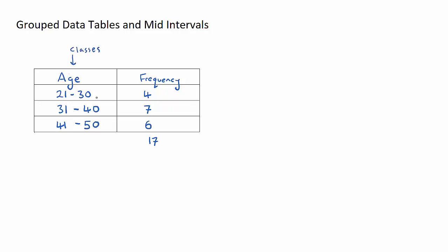We've grouped them by age brackets between 21 and 30, 31 and 40, and 41 and 50. Then the second column here is our frequency column. There were four people between the ages of 21 and 30, seven people between the ages of 31 and 40, and six people between the ages of 41 and 50. Therefore there are 17 people in total.